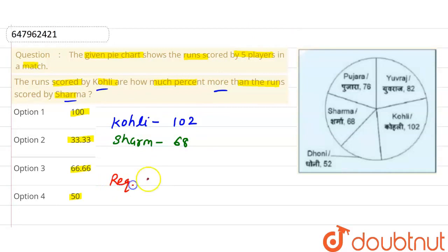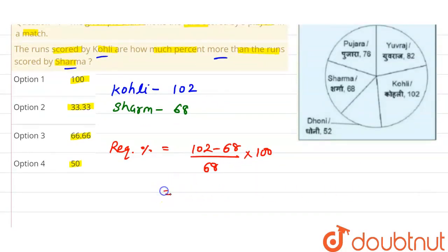The required percentage equals (102 - 68) divided by 68, multiplied by 100. With respect to Sharma, we divide by 68 and multiply by 100. When we subtract, 102 - 68 = 34. Then 34 upon 68 into 100.